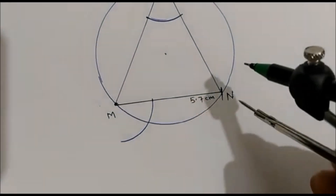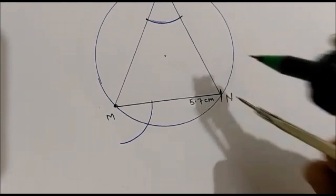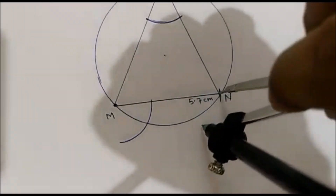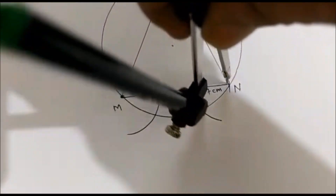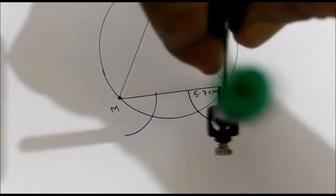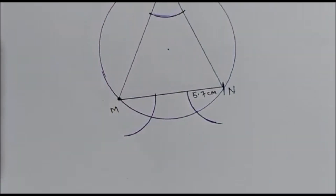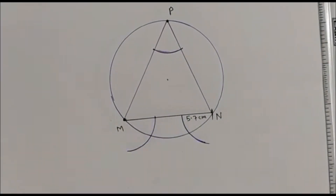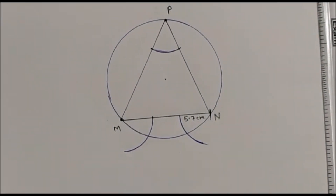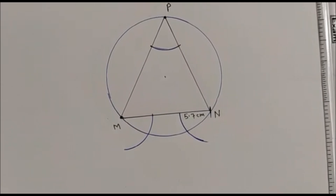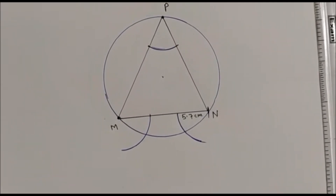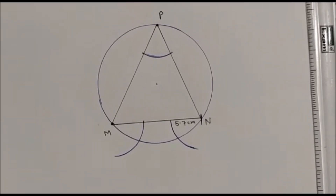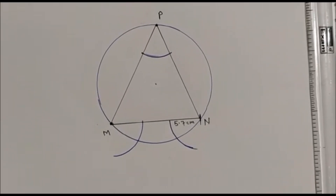Similarly, we have drawn the tangent at N also. Same step here: at point N also, keep the compass at point N and draw the arc here as well. With the same arc distance we have drawn at M and N.